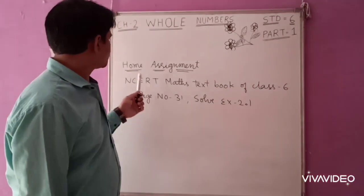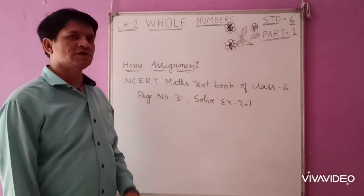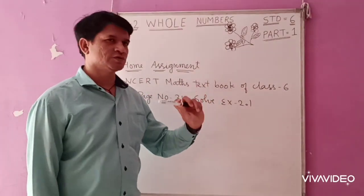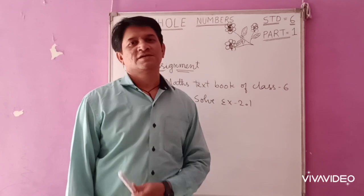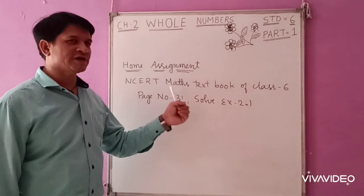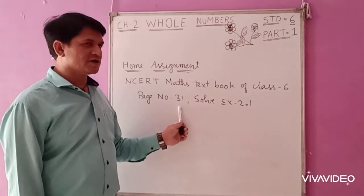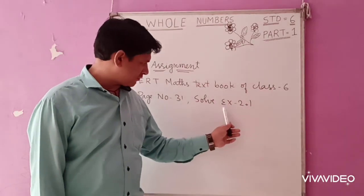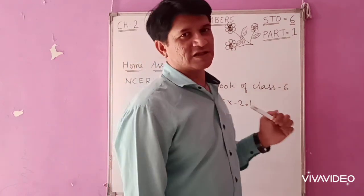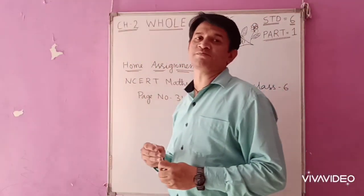Children, here is your home assignment. You have to solve this in your book. NCERT Maths textbook of class 6 — download chapter 2, page number 31, and solve exercise 2.1. The sums I have done are similar types of questions, so you can easily solve them.